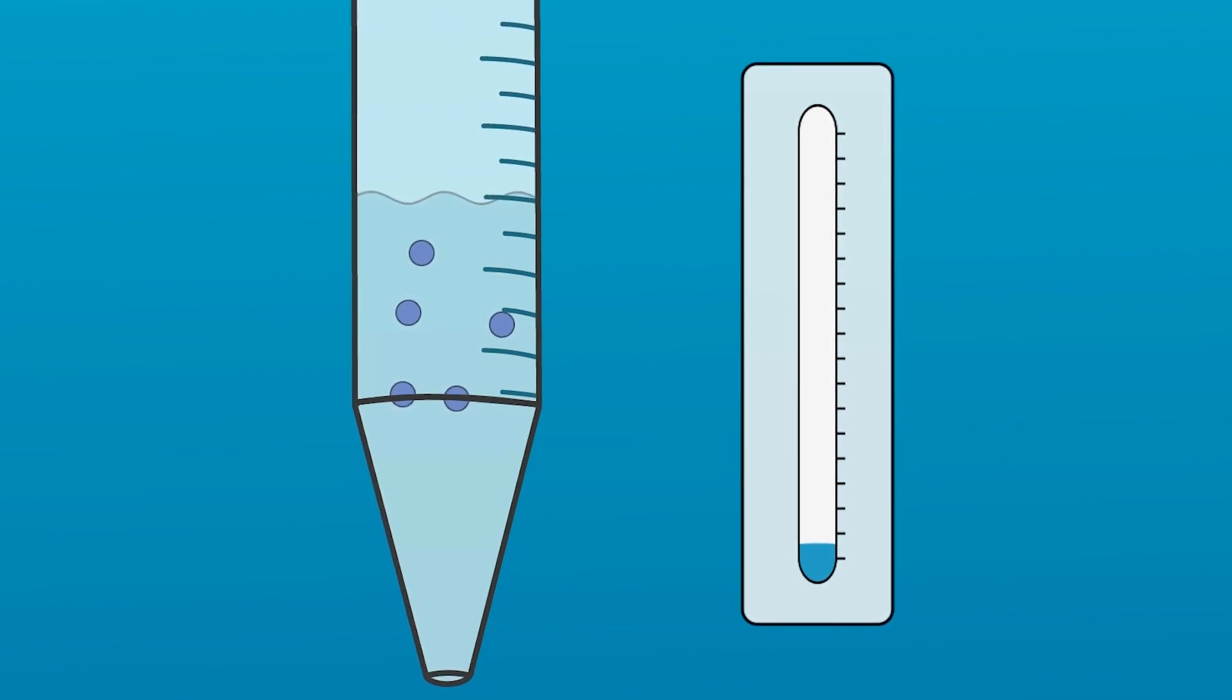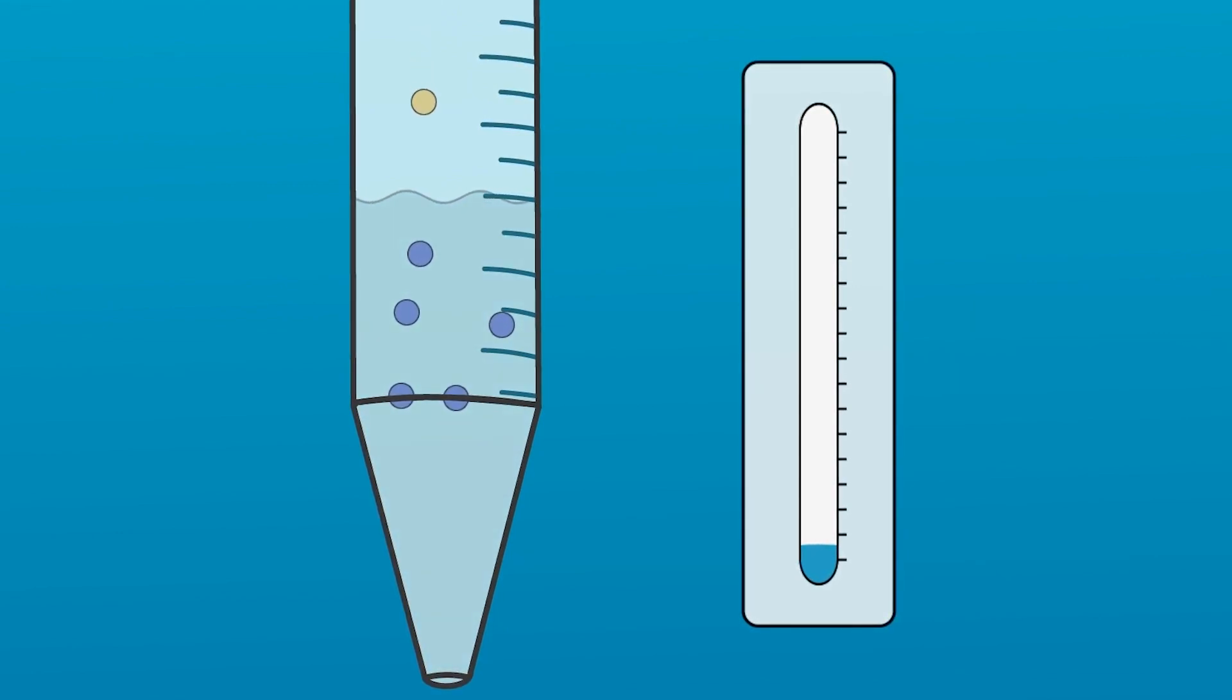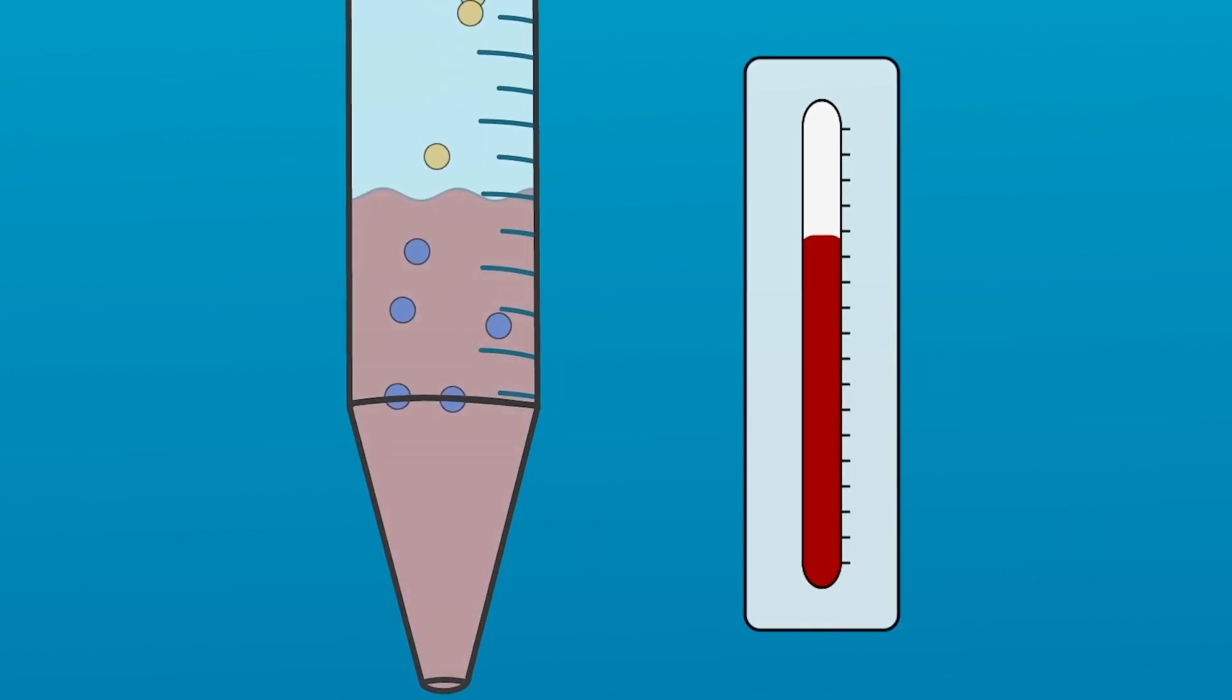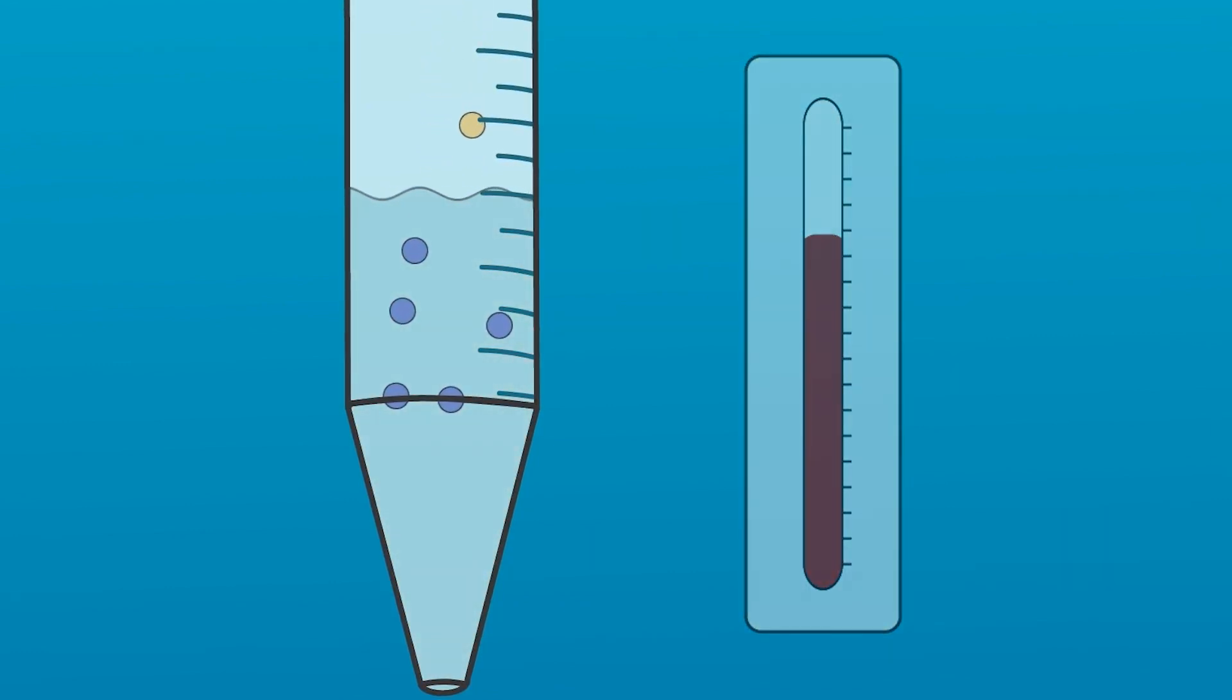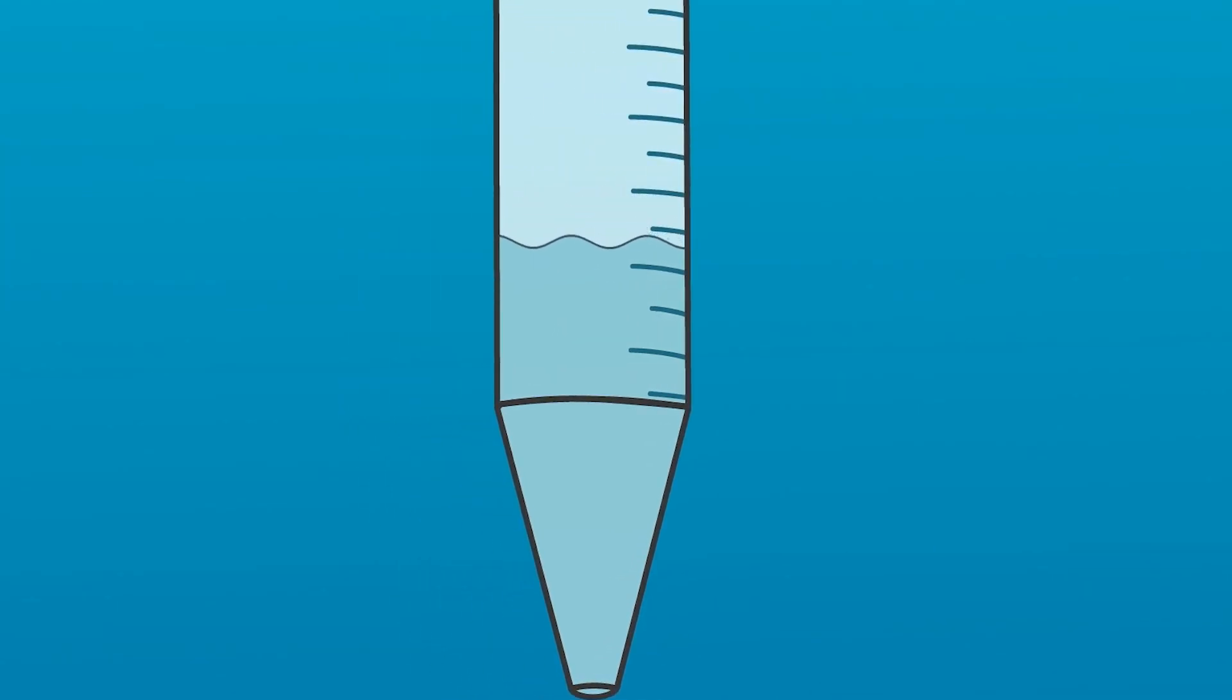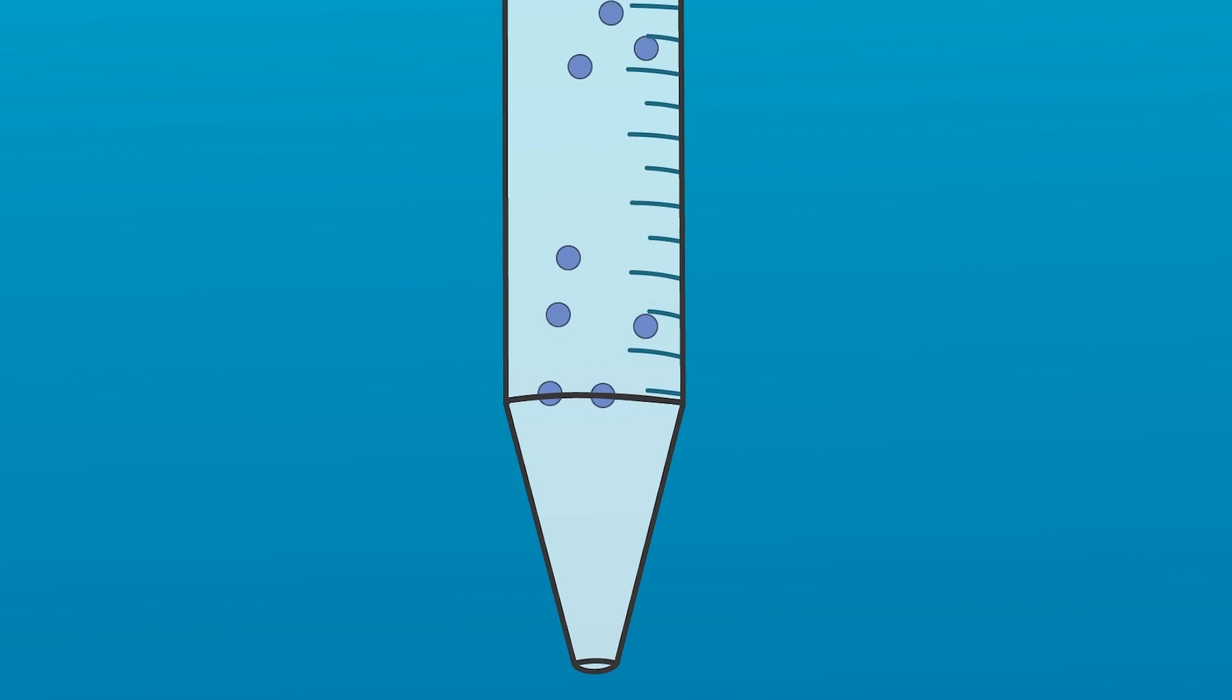To counteract this, a form of heat is added to the sample, which causes the molecules to re-energize and speed back up. The heat can be in the form of a water bath or a dry block. The sample is now in an optimal environment for concentration. The combination of heat and nitrogen blowdown allows the molecules to quickly vaporize and be whisked away from the sample.